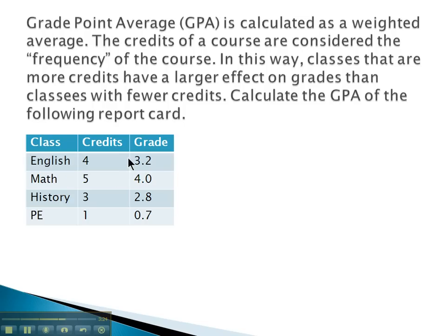So how many points did he actually earn? To find that, we multiply the grade by the credits. 4 times 3.2 is 12.8 points earned in English. 5 times his 4.0 gives a 20.0 for math points.